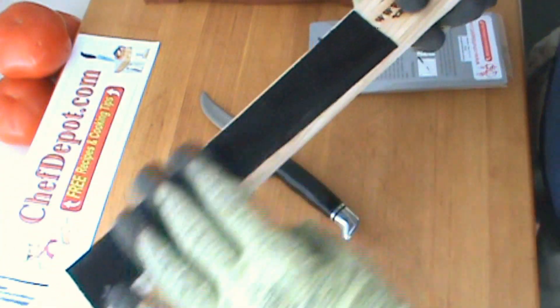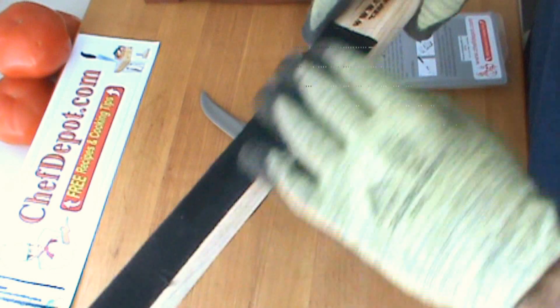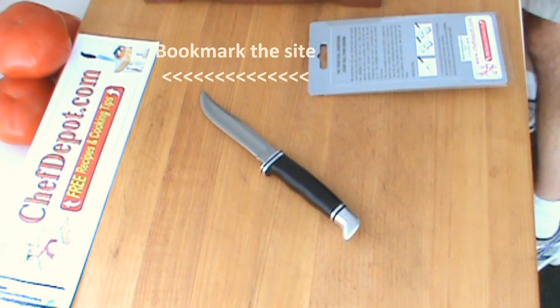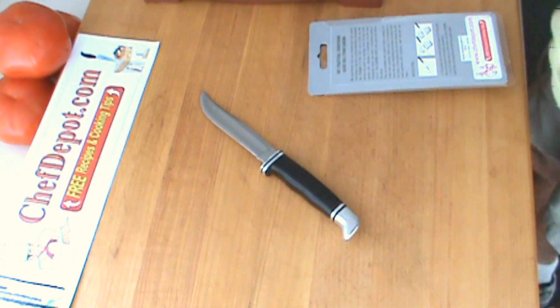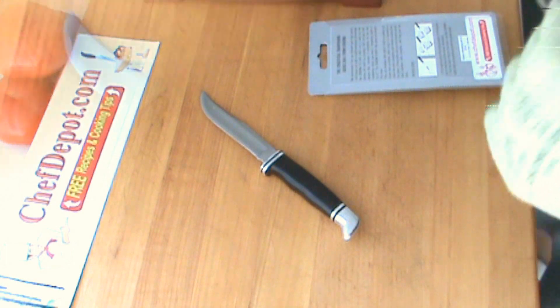This is just a leather strop mounted on a piece of wood. There's a smooth side and a rough side. With just these three items here, I'm going to get this knife sharp enough to shave the hair off your arms or shave your face. I'll be back.